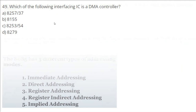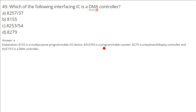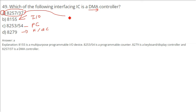Which interfacing IC is a DMA controller? DMA stands for Direct Memory Access. The answer is C — 8257. For reference: 8155 is a multi-purpose programmable I/O device, 8253/54 is a programmable counter, 8279 is a keyboard display controller, and 8257 is the DMA controller.